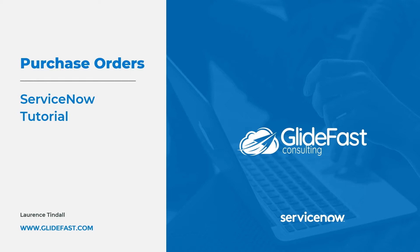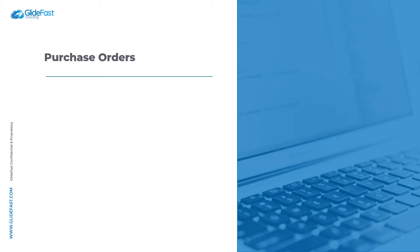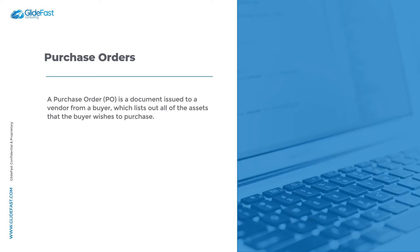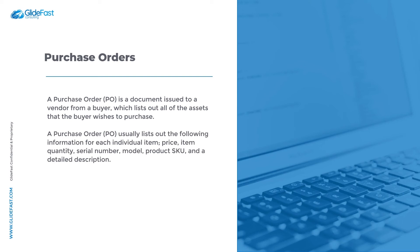A purchase order (PO) is a document issued to a vendor from a buyer which lists out all of the assets that the buyer wishes to purchase. A purchase order usually lists out the following information for each individual item: price, item quantity, serial number, model, product SKU, and a detailed description.